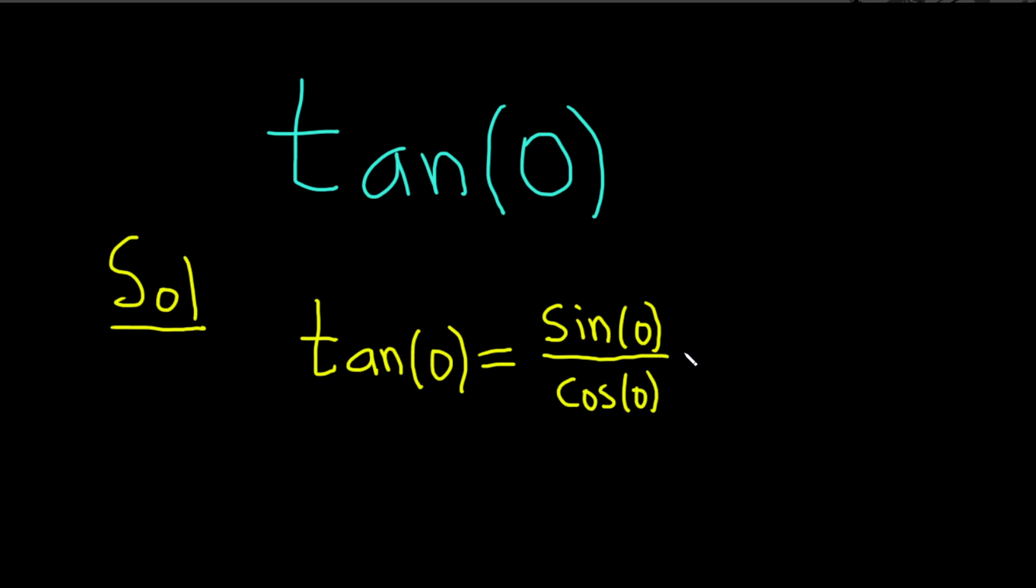And the sine of 0 is 0. And the cosine of 0 is 1. So, you end up with 0 over 1, which is equal to 0.